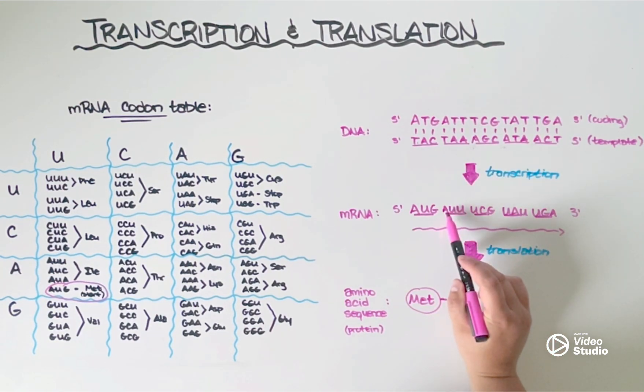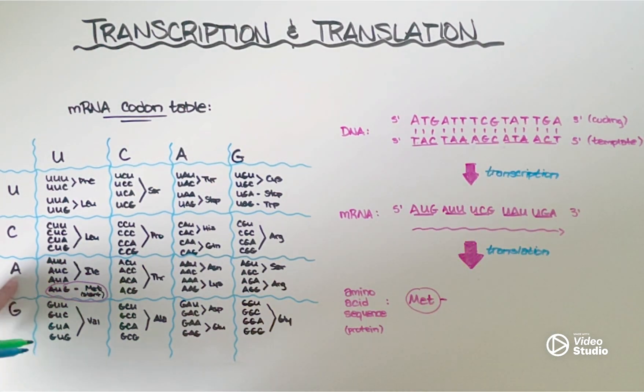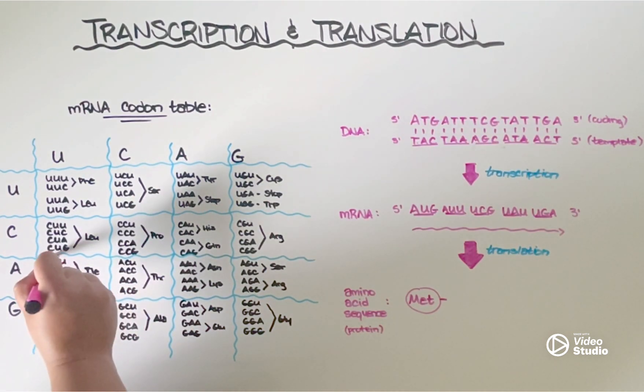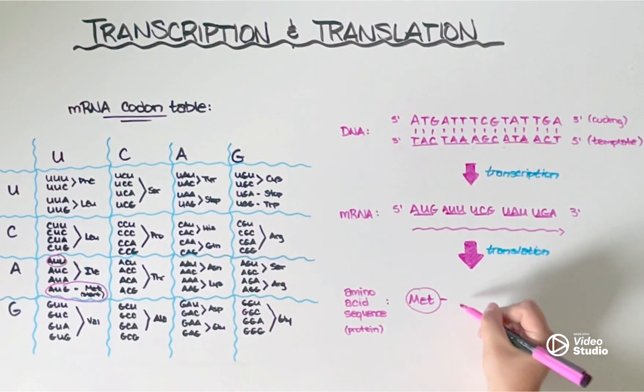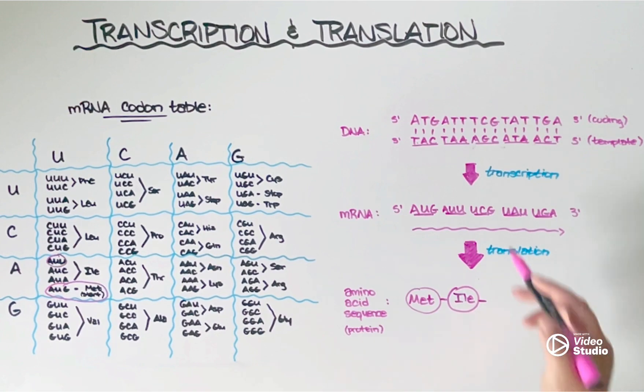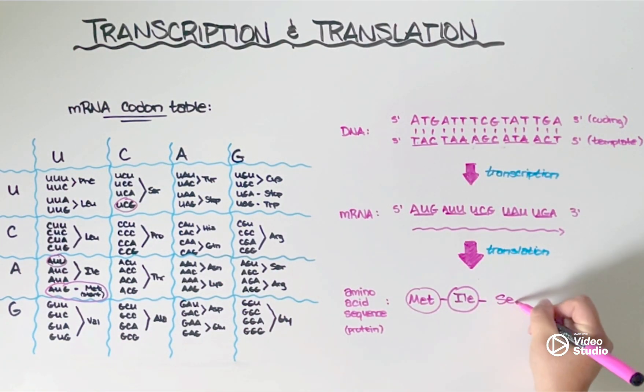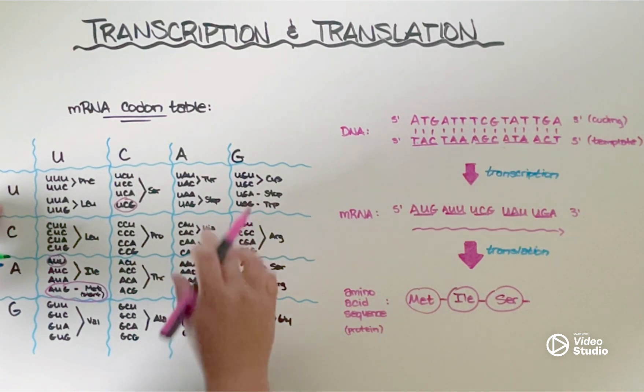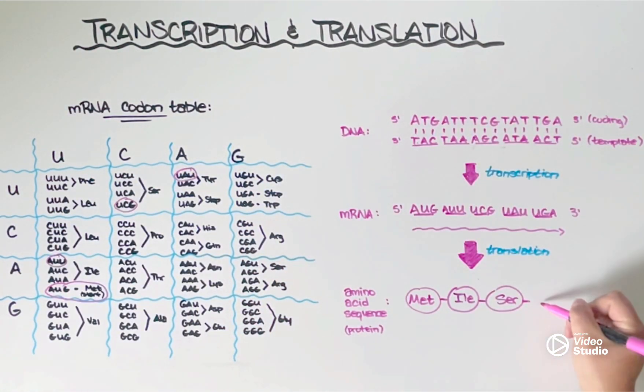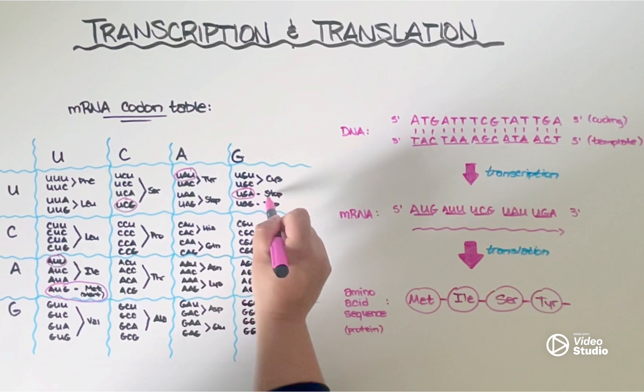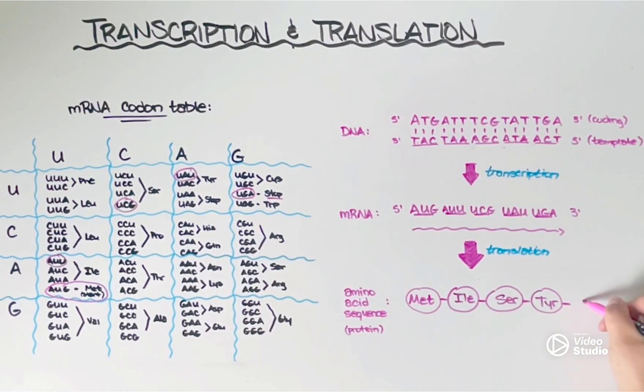Next, we're going to look for the second codon from the mRNA is AUU. So we'll look again at the A and the U, and here it is. AUU results in the amino acid ILE, or isoleucine. So that's the next amino acid in the sequence. UCG is the next one, and that results in serine, or SER. Then we have UAU, which results in tyrosine, or TYR. And then lastly, UGA, which actually doesn't result in any amino acid at all. It results in something called a stop codon. So that's not technically an amino acid, but we can put it in there just to remind ourselves that that is where the chain ends.